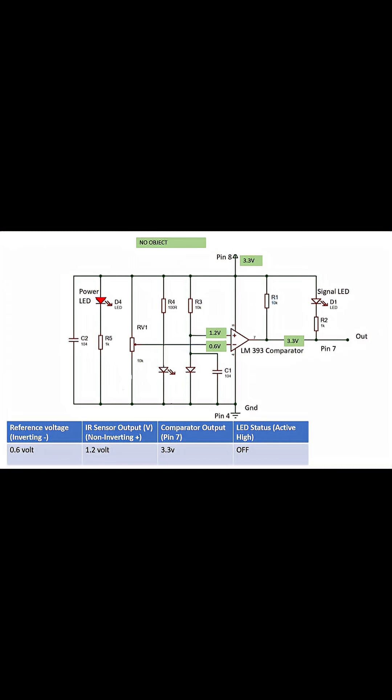There's no object near the sensor. The IR rays don't reflect back to the photodiode, so its voltage is higher, around 1.2 volts.